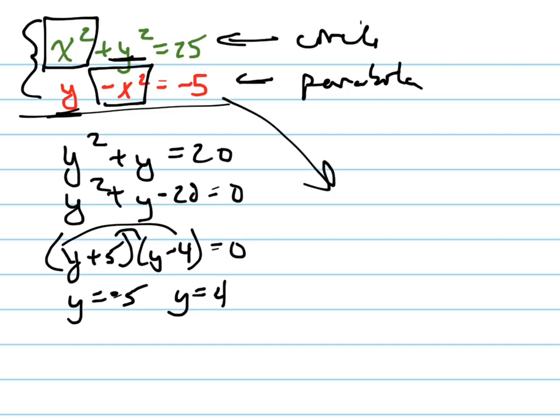And now I'm going to plug it in. Might as well plug it into the easier one, into my easier equation up here. Negative 5, I'm plugging that in for y, minus x squared equals negative 5. So when I solve this, I get x equals 0. So one of my solutions is 0, negative 5.